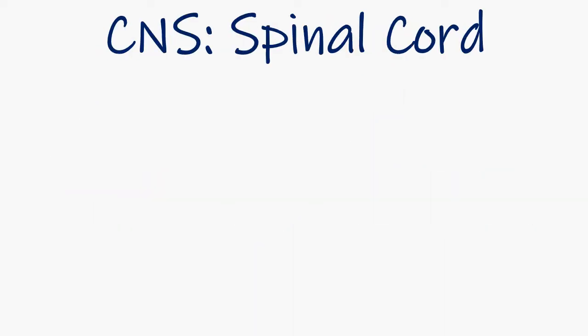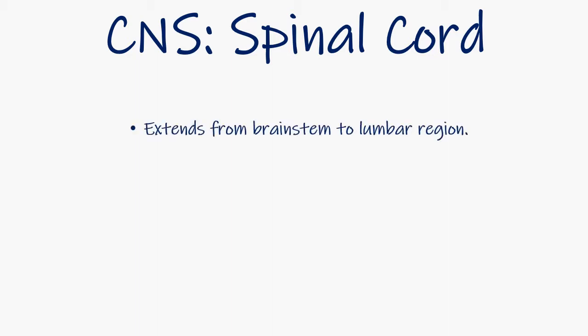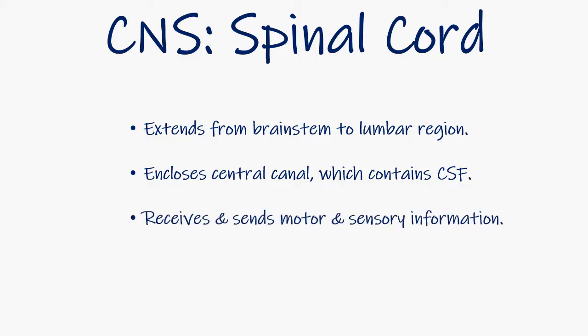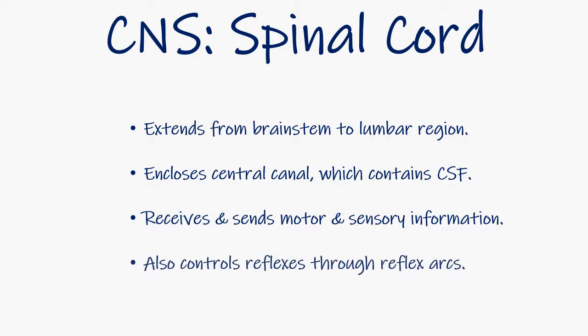Let's use the spinal cord as an example of the histology of the central nervous system. The spinal cord extends from the brainstem to the lumbar region and encloses a central canal which contains cerebrospinal fluid, often abbreviated as CSF. It receives and sends motor and sensory information from the rest of the body, and you may also hear of its role in reflex arcs.